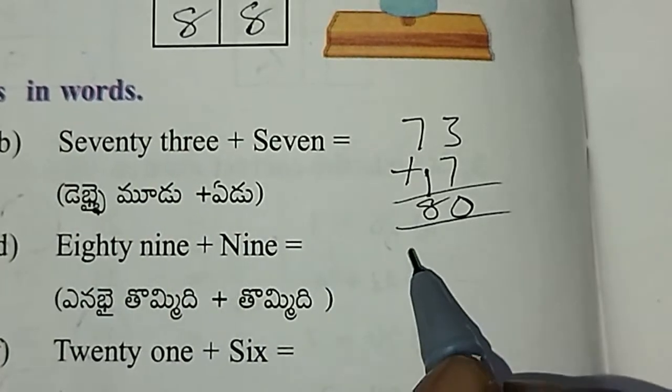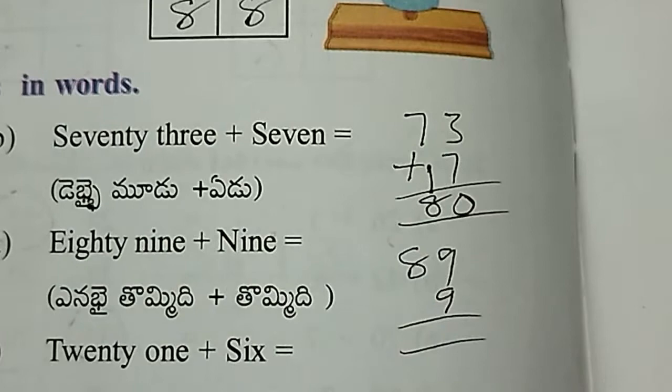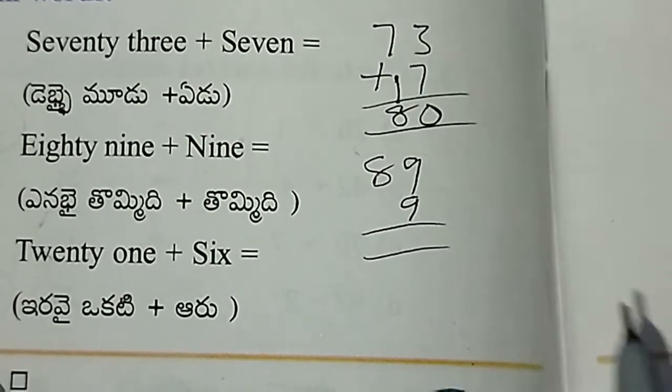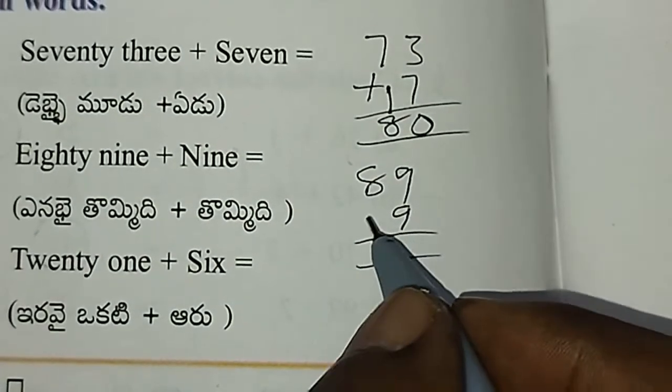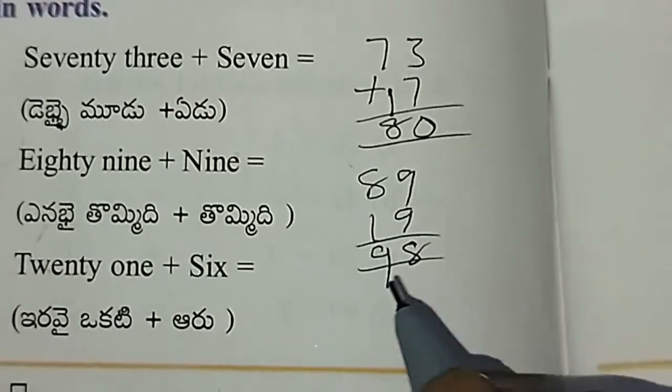Next, 89 plus 9. For 9 plus 9, two nines are 18. Then 8 plus 1 is 9, giving us 98.